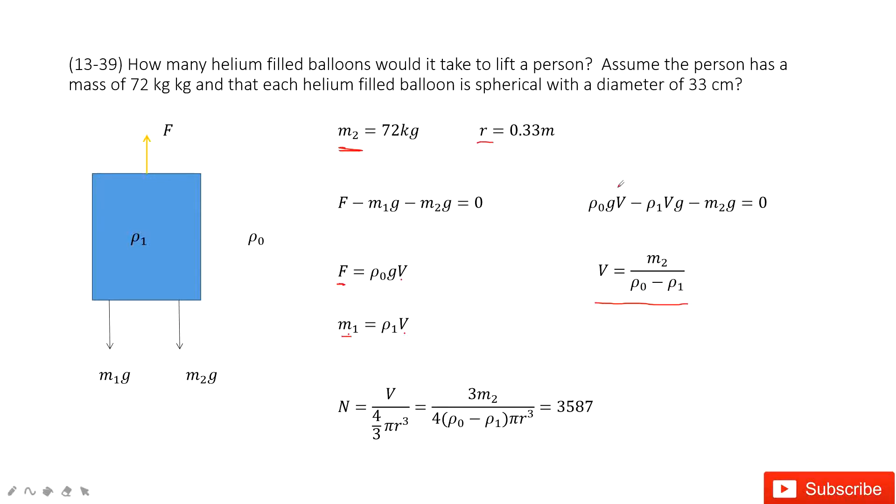Now it tells you for each balloon, it has a diameter of 33 cm. So for each one, the volume is 4 over 3 pi r cubed.